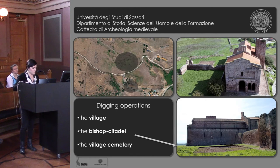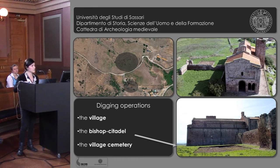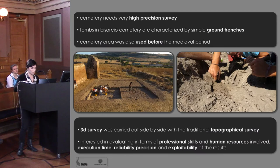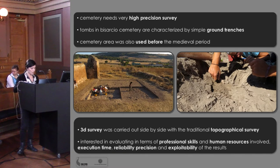The cemetery area was chosen as the ideal case study. It needs a high precision survey and it's not easy to transform it into a tourist-visitable site, especially in situ. Tombs in Bizarcio's cemetery are characterized by simple ground trenches and there aren't any brick structures or headstones to mark their presence. Furthermore, the cemetery area was also used before the medieval period. Therefore, it was mandatory to record and remove them to understand and analyze the earlier context.